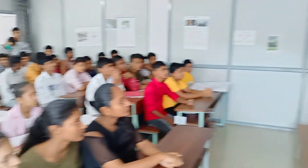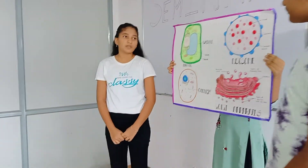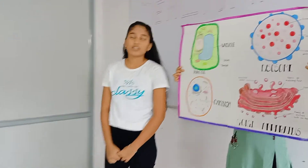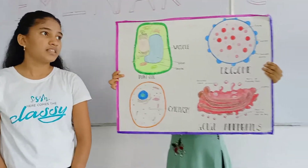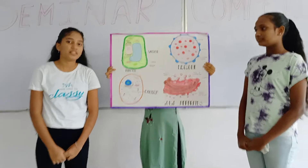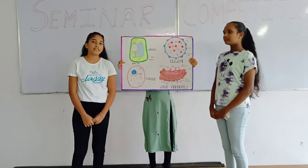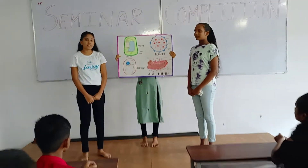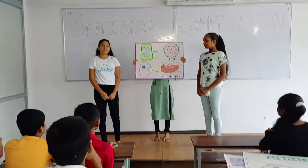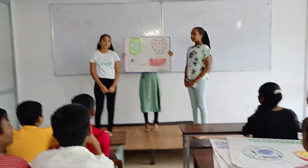For example, vacuole is one of the most important places in the cell. In plant cells, they are large but are small in number. In animal cells, they are small but are large in number.